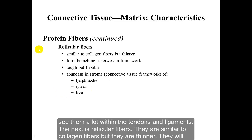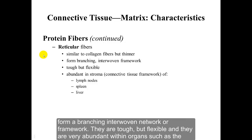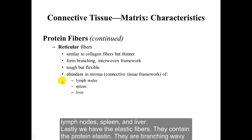The next fiber type is reticular fibers. They are similar to collagen fibers but thinner. They form a branching, interwoven network or framework. They are tough but flexible, and they are very abundant within organs such as the lymph nodes, spleen, and liver.